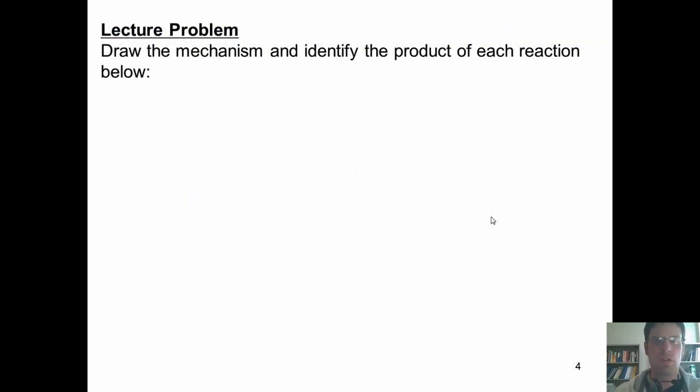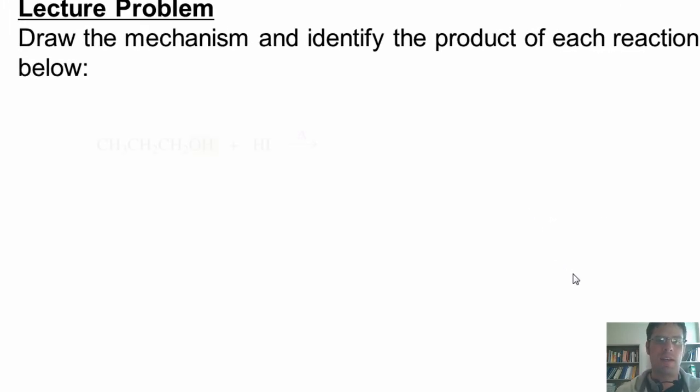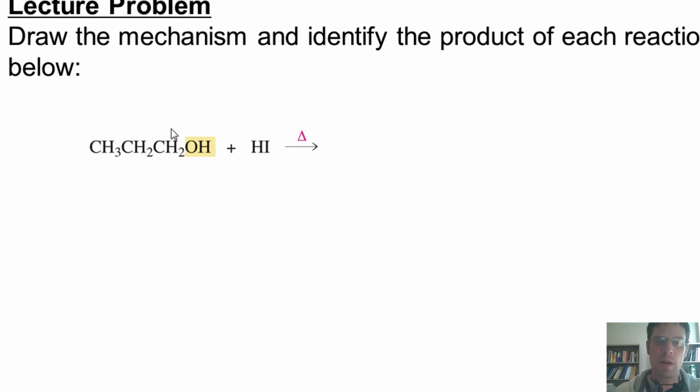Let's look at some specific examples. Draw the mechanism and identify the product of each reaction below. Here's the first one. I've got this molecule propanol reacting with hydroiodic acid. Now, I'm not going to actually draw the mechanism, but we'll try to ask you to imagine it in your mind. First thing that occurs is the lone pair of electrons in the oxygen grab the hydrogen and form a bond with it to give me a positively charged protonated oxygen. Then the I- comes in as a nucleophile, forms a bond with a CH2, and kicks off the H2O leaving group in a single step, SN2 style, to give me this product, one iota propane.